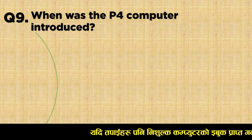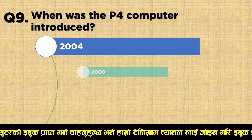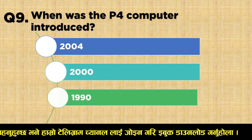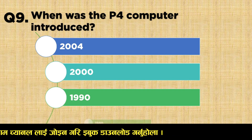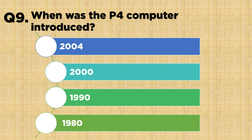Question number 9: When was the P4 computer introduced? Option A: 2004, Option B: 2000, Option C: 1990, Option D: 1980. The correct answer is 2000.